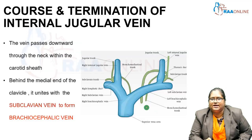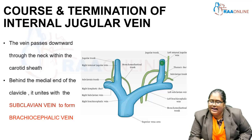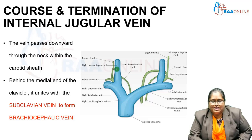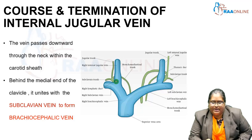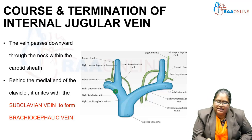Regarding the course and termination: the vein passes downwards through the neck within the carotid sheath, and behind the medial end of the clavicle it unites with the subclavian vein to form the brachiocephalic vein. Looking at this picture, the right internal jugular vein unites with the right subclavian vein behind the medial end of the clavicle to form the right brachiocephalic vein.